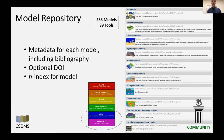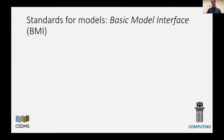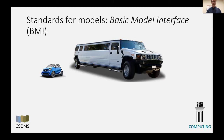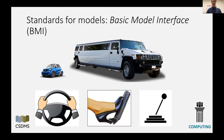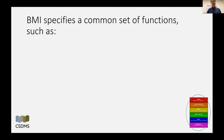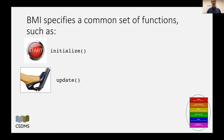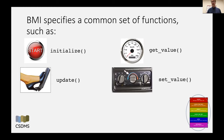Another thing that CSDMS is focused on is model interface standards. In our technological world, we take interface standards for granted — for example, if you rent a car, whether it's a tiny electric or a huge gas guzzler, you assume there will be a standardized set of controls that any driver will understand. Similarly, we've developed a Basic Model Interface that provides a common set of control functions for numerical models: initializing a model, updating it for one iteration, querying data values, and if necessary setting data values — which becomes important for coupling — and cleaning up when the model has run. The Basic Model Interface consists of a set of about 30-odd functions like these.